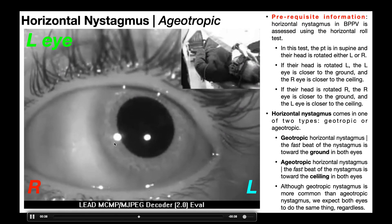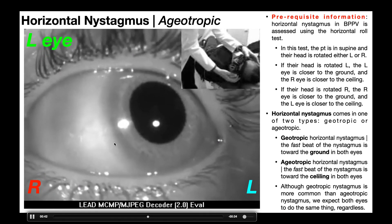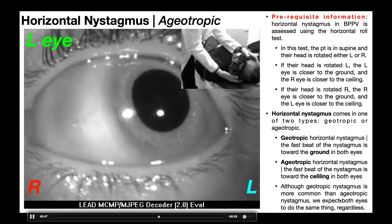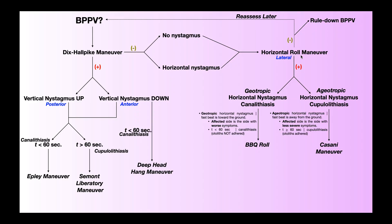We're only looking in one eye here, and that's okay, because regardless of whether we're dealing with geotropic or ageotropic nystagmus, both eyes are going to do the exact same thing in BPPV. If the horizontal roll maneuver reproduces geotropic horizontal nystagmus, the patient has a lateral or horizontal canalolithiasis, and the nystagmus should be expected to last less than 60 seconds, indicating the otoliths are not adhered.